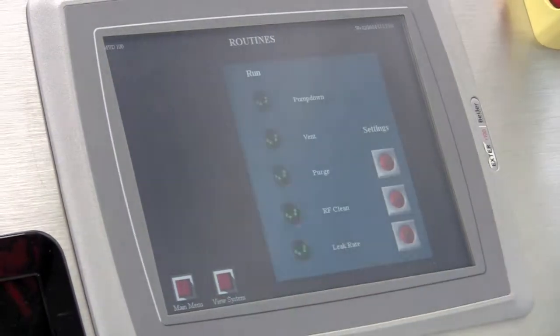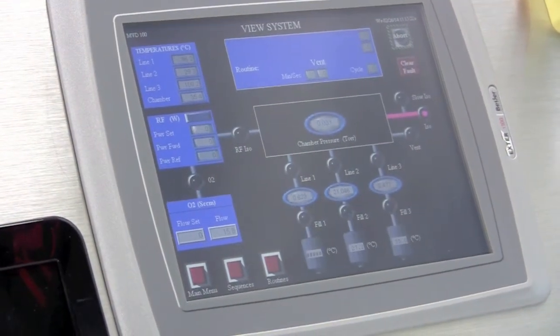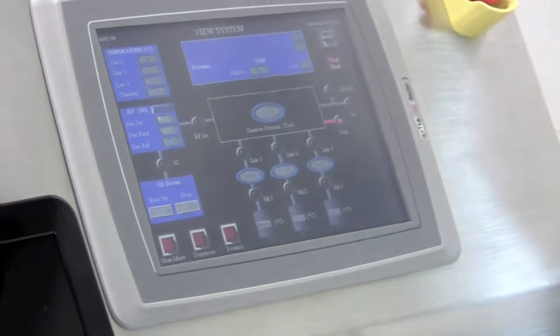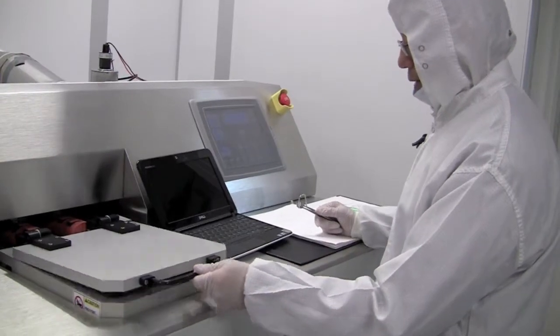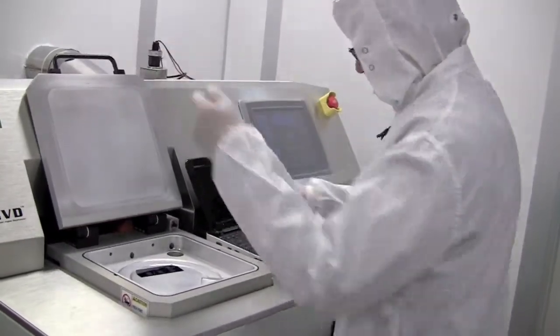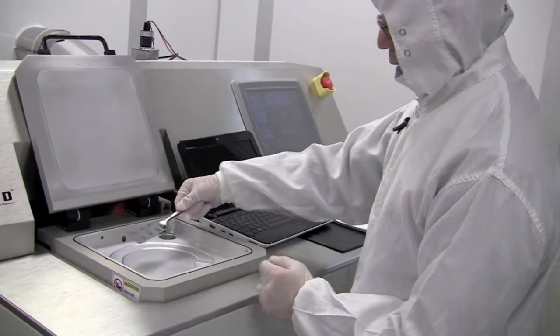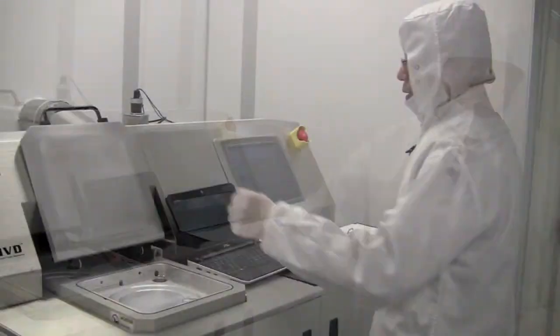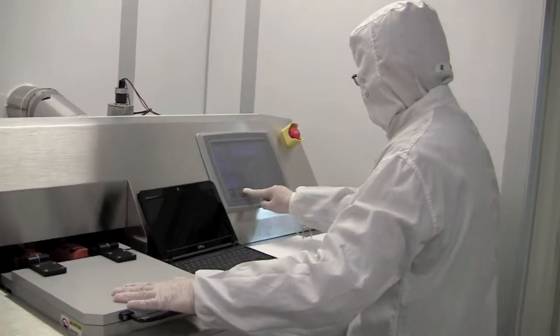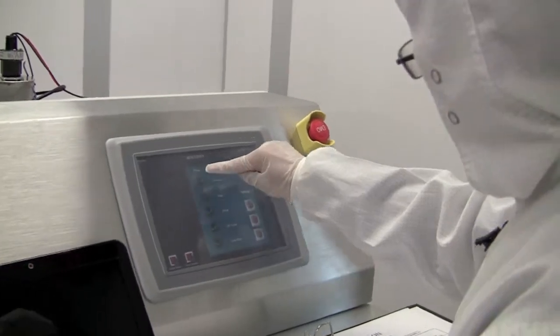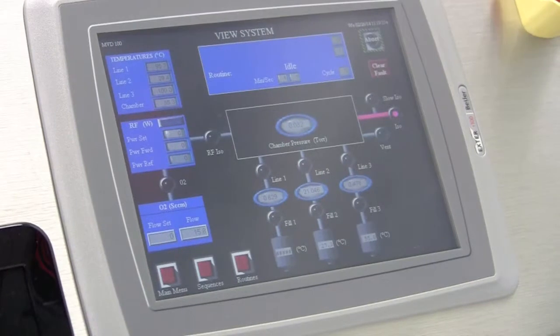We push routines again and vent the chamber. And the nitrogen comes in. We will hear the hissing sound again. Okay, we hear the hissing sound. And put the sample into the container. We close the lid and touch routines and pump down the chamber. Now the chamber is pumped down.